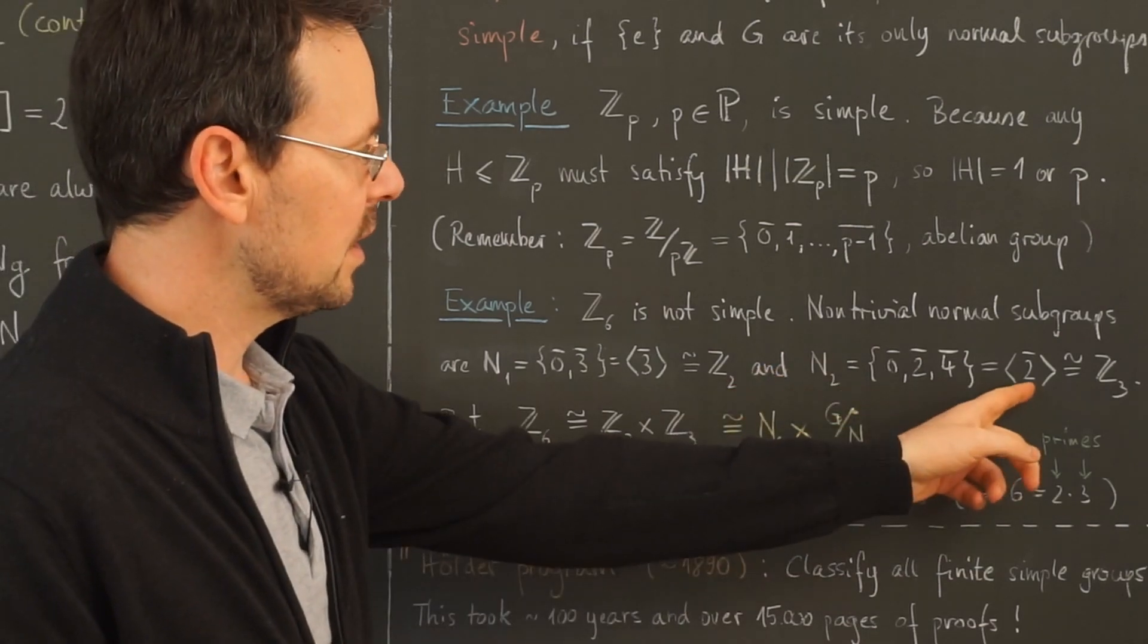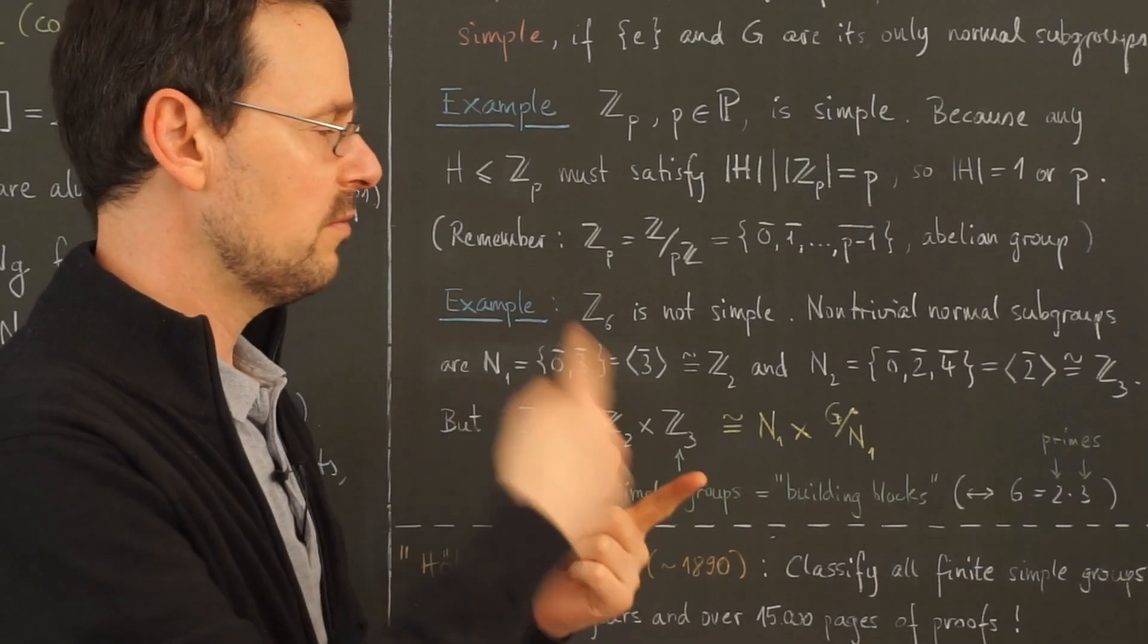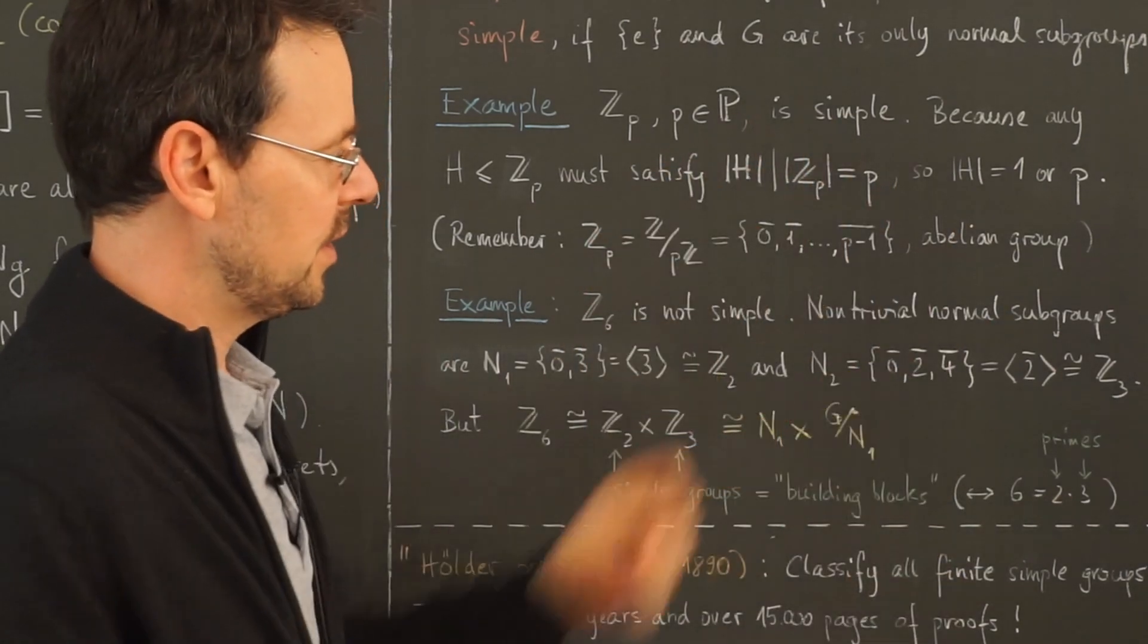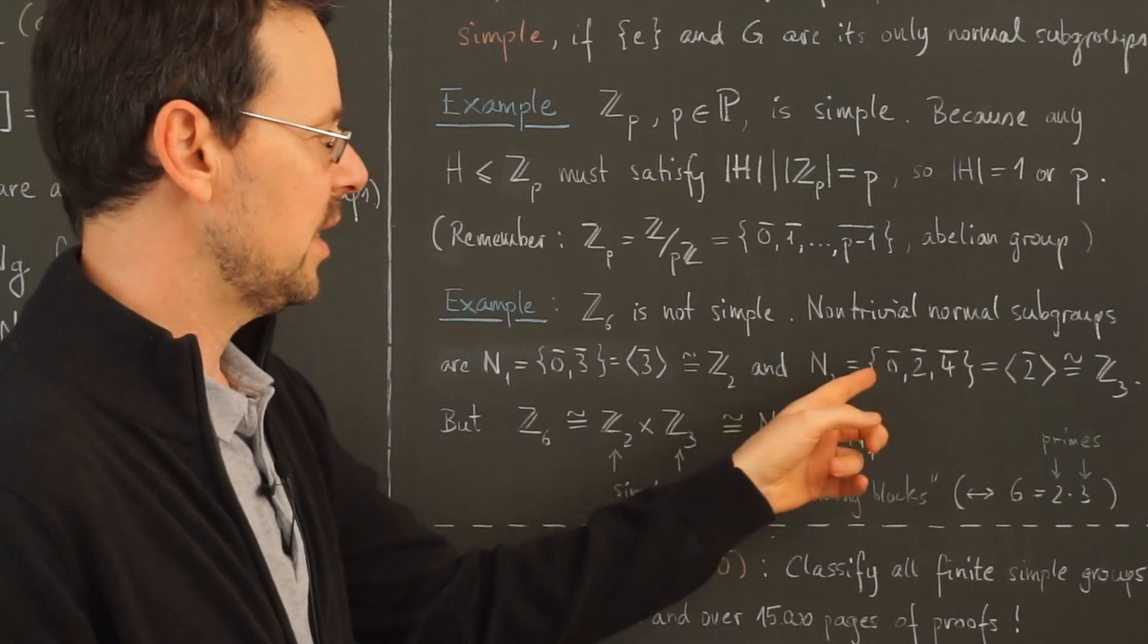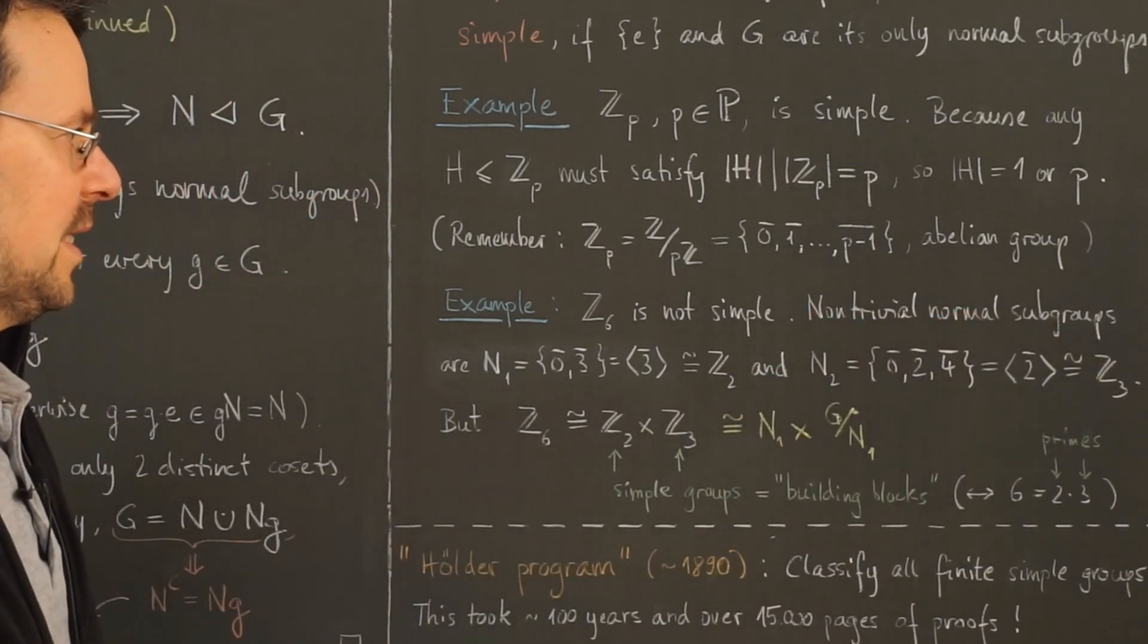Another one is the cyclic subgroup generated by 2 bar, which consists of 2 bar, 4 bar, 6 bar, which again is 0 bar. So this contains three elements, hence is isomorphic to Z3.